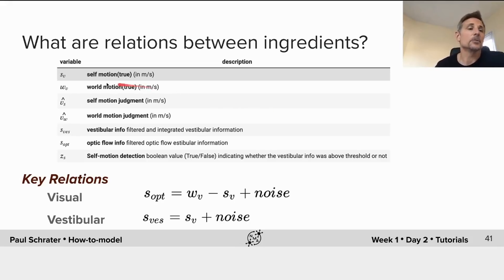The first two variables are the actual motions that the participant experienced during the experiment. The self-motion, which was sometimes zero and sometimes one, and the world motion, those are the actual things that are experienced. And the ones with hats on them, the V-hat and V-W-hat, are the data that we're trying to explain. These are the slider judgments that our participants generated for us.